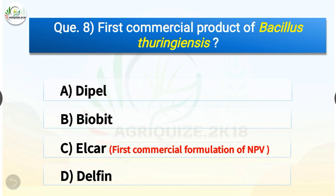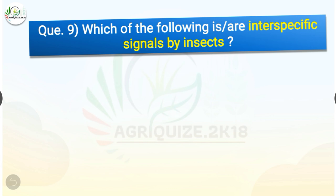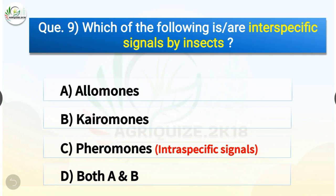Question number eight: the first commercial product of Bacillus thuringiensis is — options are Dipel, Biobit, Elcar, or Delphin. The correct answer is option A, Dipel. The first commercial formulation of NPV is Elcar. Question number nine: which of the following are interspecific signals by insects? Options are allomones, kairomones, pheromones, or both A and B. The correct answer is option D, both A and B. Allomones and kairomones are interspecific signals, whereas pheromones are intraspecific signals.